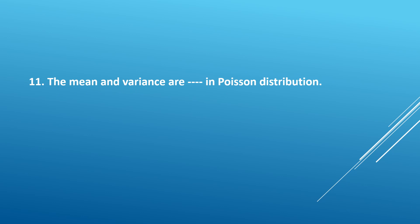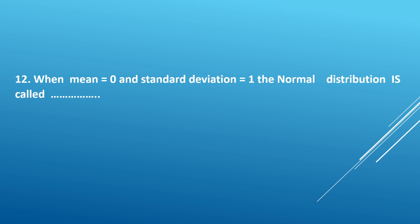Eleventh question: The mean and variance are dash in Poisson distribution. In Poisson distribution, mean and variance are equal. Twelfth question: When mean mu is equal to zero and standard deviation sigma is equal to one, the normal distribution is called dash. The answer is standard normal distribution.